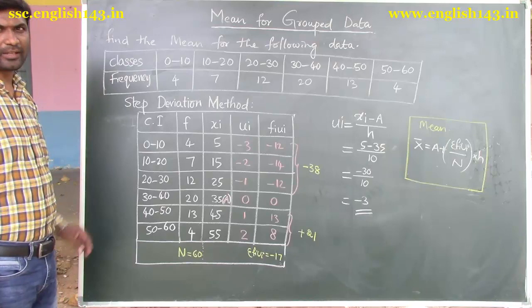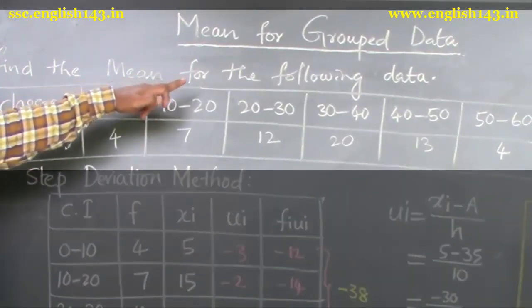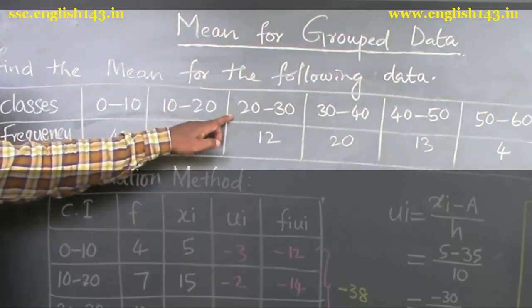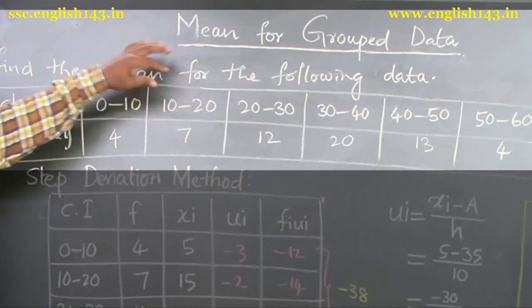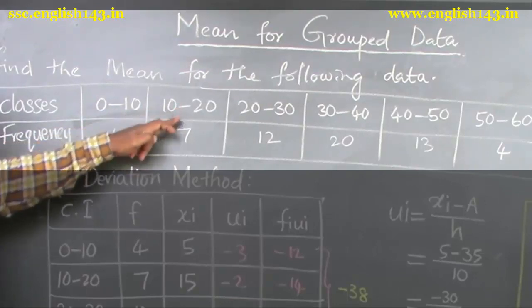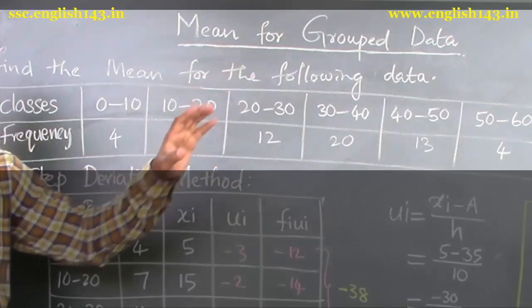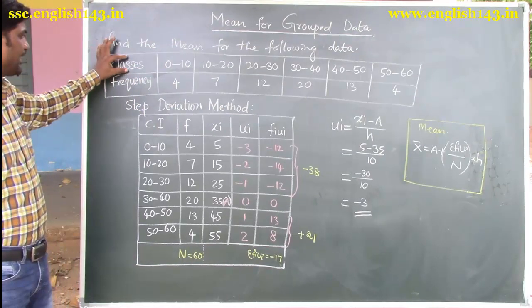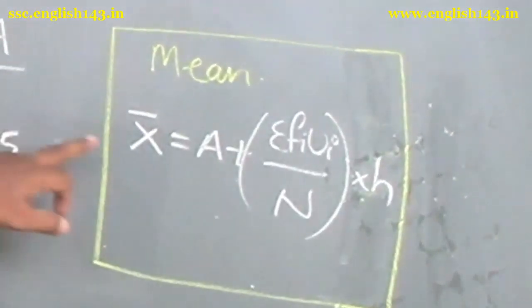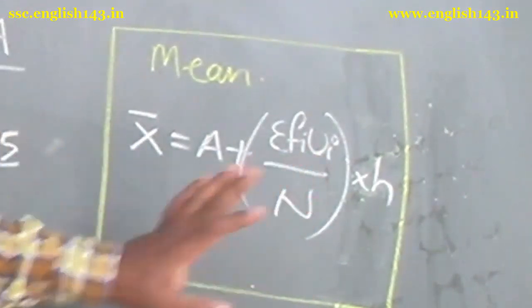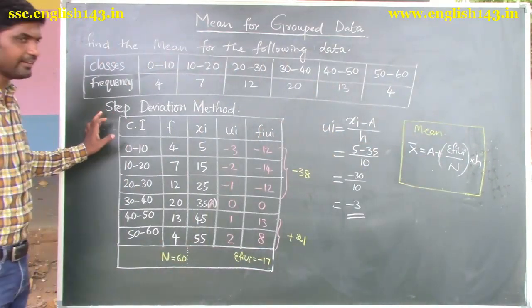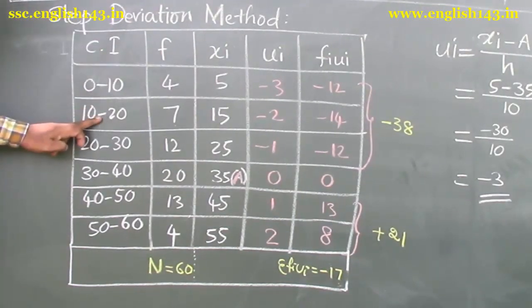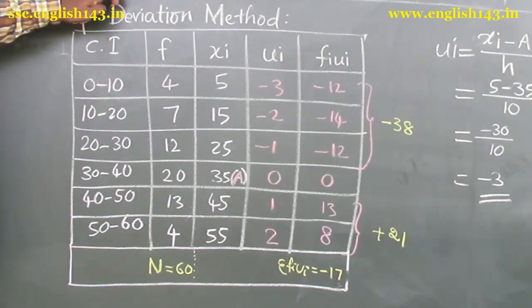Now we will see one example. Find the mean for the following data. The given data has classes and frequencies: 0 to 10, 10 to 20, 20 to 30, 30 to 40, 40 to 50, 50 to 60 — six classes. We will use the step deviation method. The formula is X̄ = a + (Σfi·ui / n) · h. According to this formula, we create a table. Writing the class intervals: 0 to 10, 10 to 20, 20 to 30, up to 50 to 60.